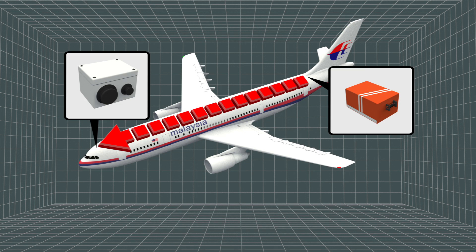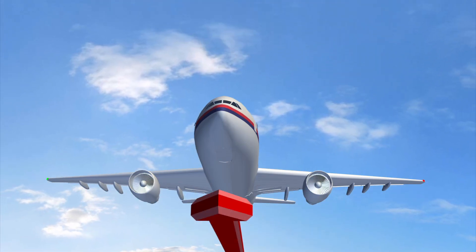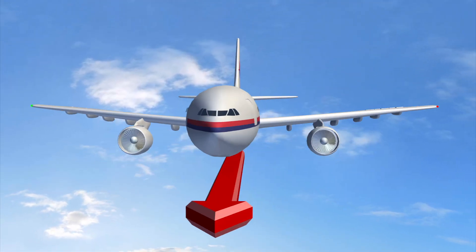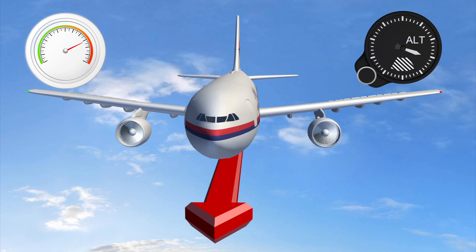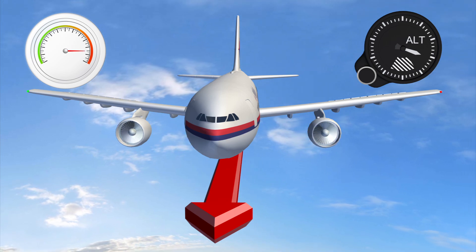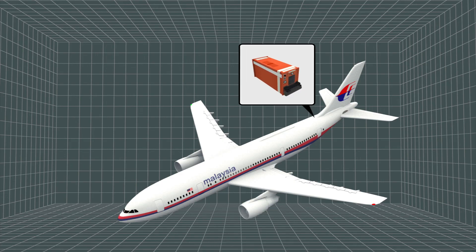The flight data recorder stores information from the flight data acquisition unit in the cockpit that supplies data including the plane's heading, altitude, and airspeed.